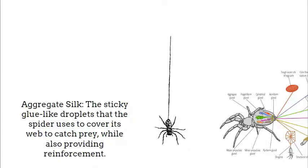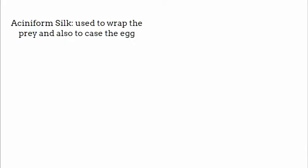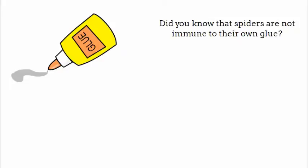Aggregate silk consists of sticky glue-like droplets that the spider uses to cover its web to catch prey while also providing reinforcement. Minor ampullate silk is used as a temporary outline at the beginning of the construction of the web. Lastly, aciniform silk is used to wrap the prey and also to encase the egg, and pyriform silk is used for egg casing.